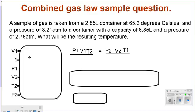A sample of gas is first at 2.85 container, and it's taken to a larger container with 6.85 capacity. That would be V2, the 6.85, and the 2.85 would be V1.